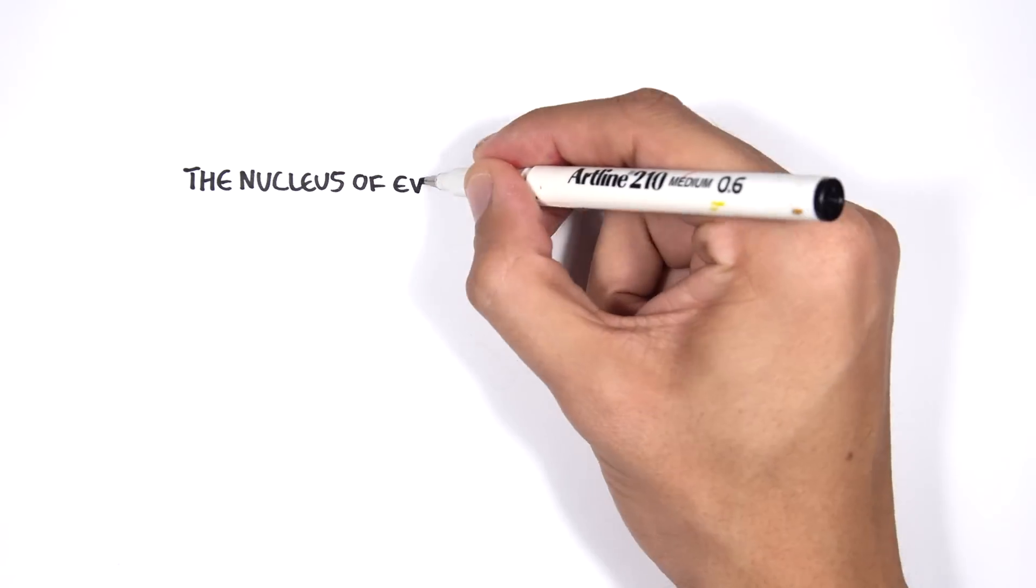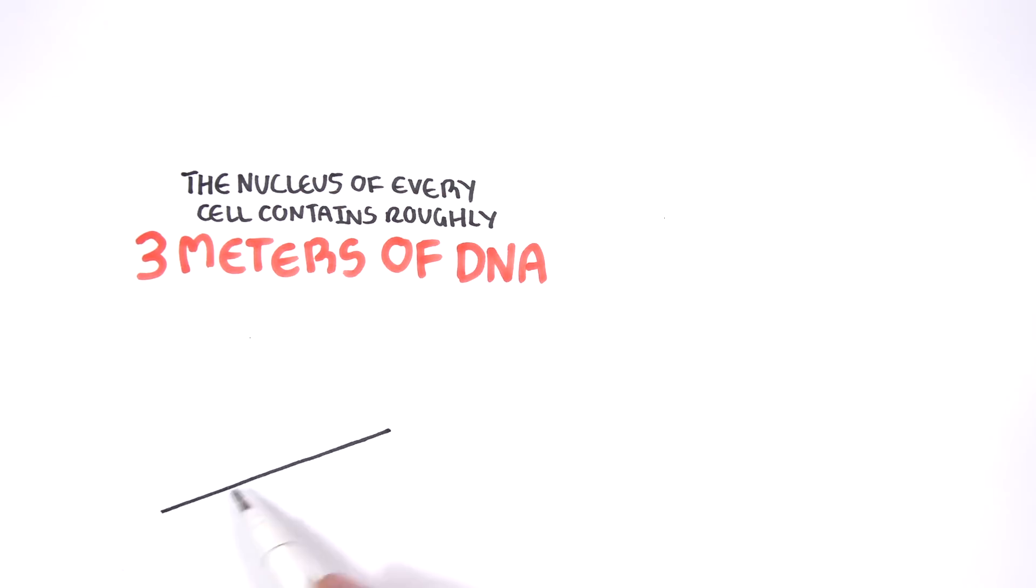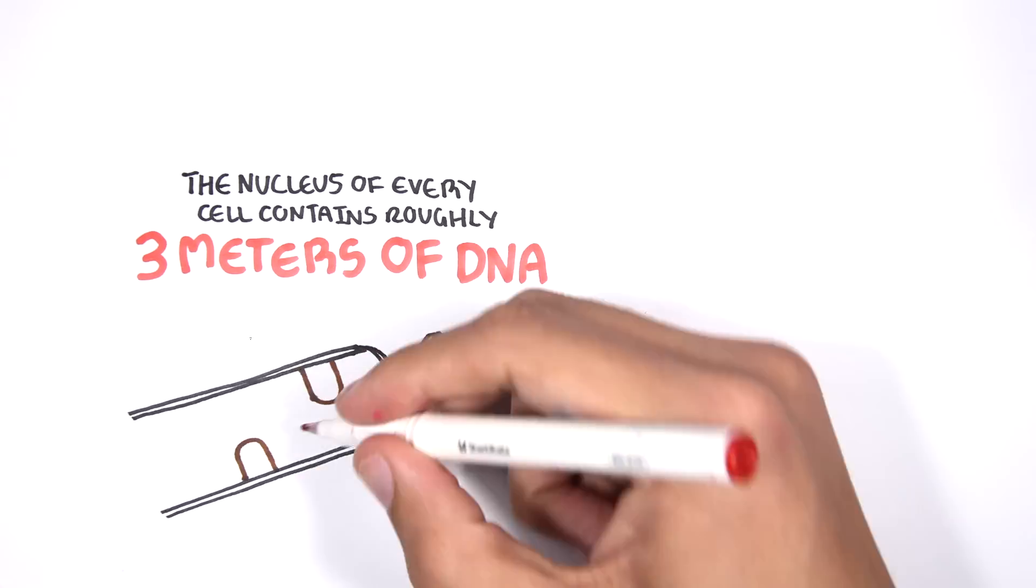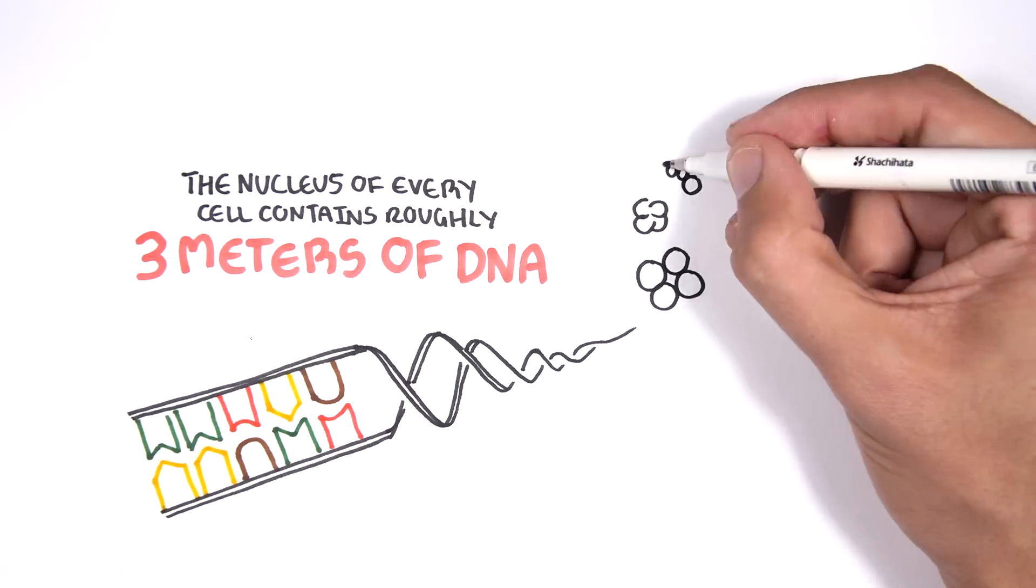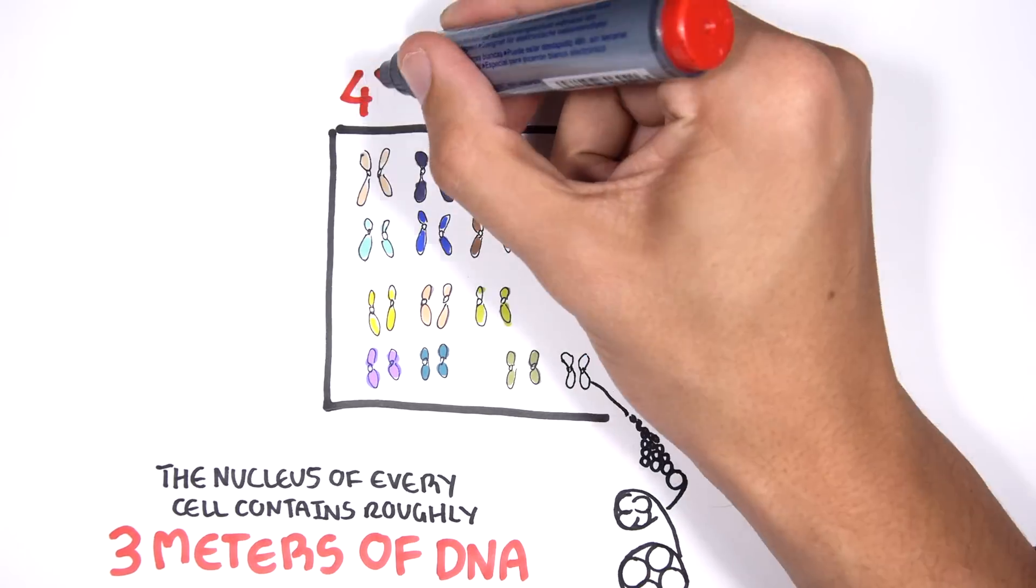But to understand the abnormal, we must first understand the normal. The nucleus of every cell in our body contains roughly 3 meters of DNA. To make it fit, the DNA is tightly compacted, then squeezed into tubular structures called chromosomes, 46 in total.